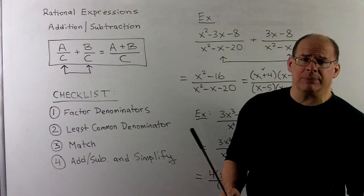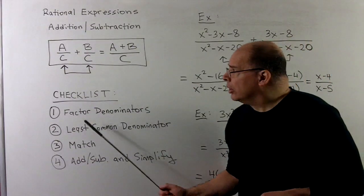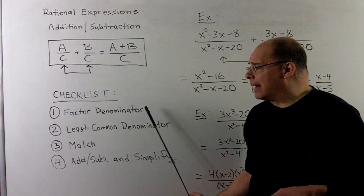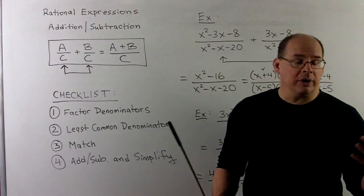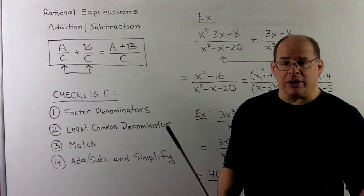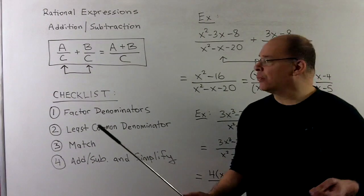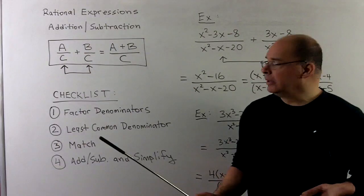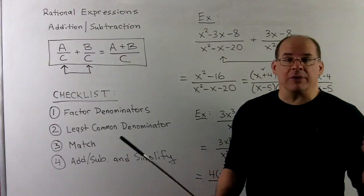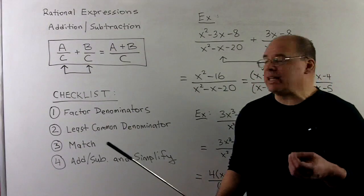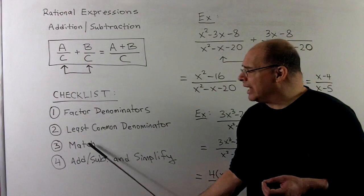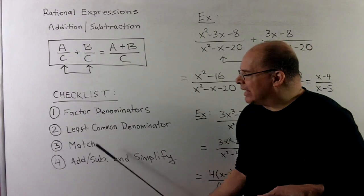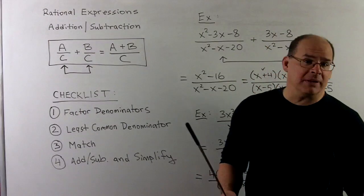Here's the general checklist. First step: if the denominators don't match, we're going to factor our denominators and figure out the least common denominator — that's an expression for which all denominators are a part of. Then we figure out the parts we need to match the LCD for each denominator, that gets the denominators to match, and then we add or subtract and simplify if needed.